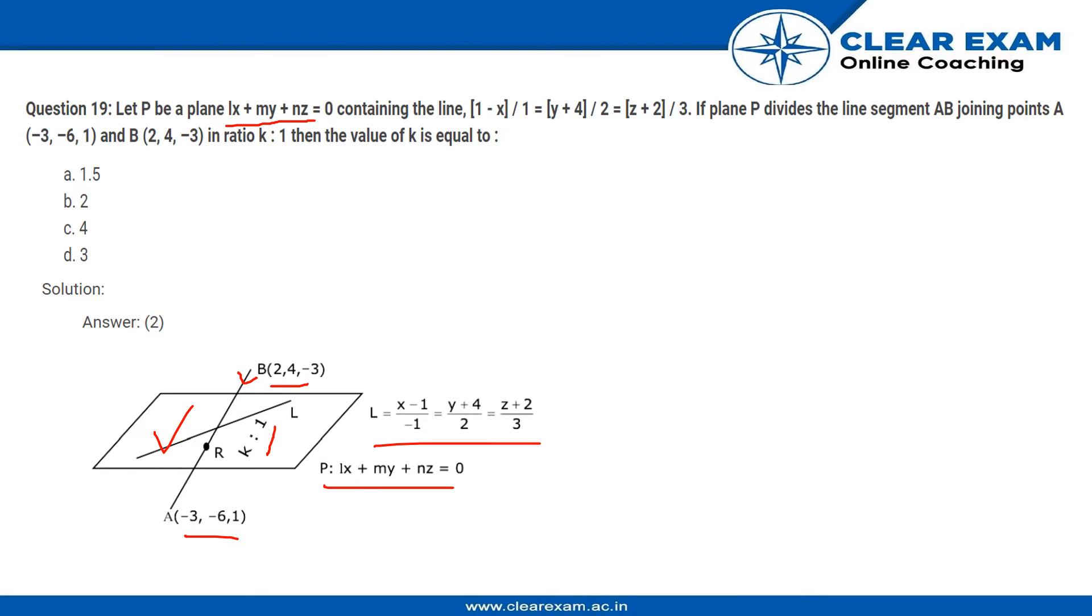of line. We know that the line lies on the plane, so we can say the direction ratios can be put in the plane to get the values. As we know, the direction ratios also give us another point on the plane, so we put minus 1,